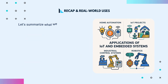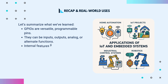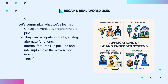Let's summarize what we've learned. GPIOs are versatile, programmable pins. They can be inputs, outputs, analog, or alternate functions. Internal features like pull-ups and interrupts make them even more useful. They are key to connecting sensors, actuators, and user interfaces.